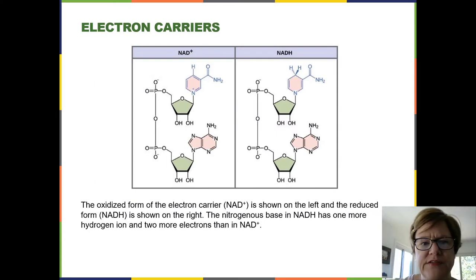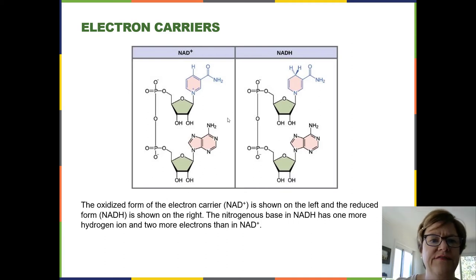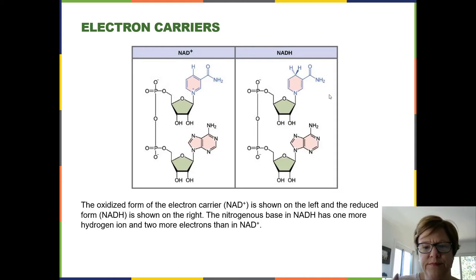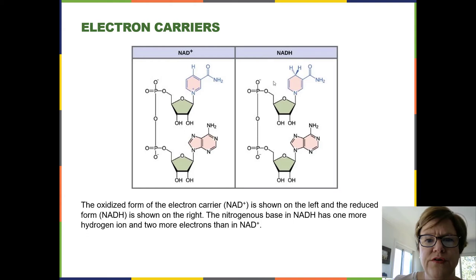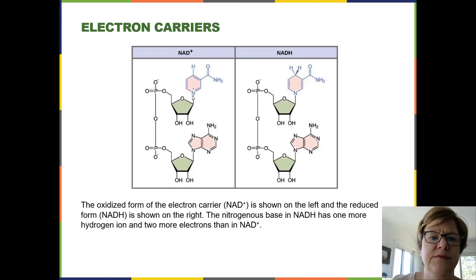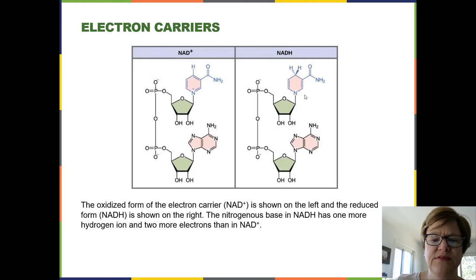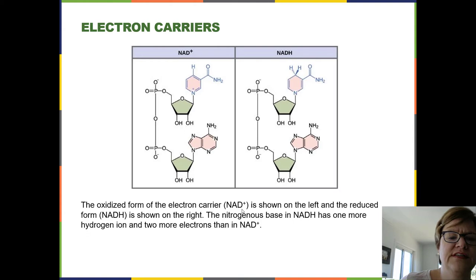Here's the actual molecule — you don't have to memorize the structure, but it's a complicated molecule. Shown on the left is the NAD+ version and on the right is the NADH version. Comparing both side by side, they're hardly different at all, except for a little difference with an extra hydrogen. You can see the plus sign on the nitrogen in the nitrogenous base gets neutralized. NAD+ doesn't have the extra two electrons and a hydrogen; NADH does.